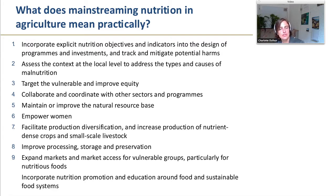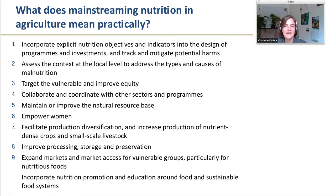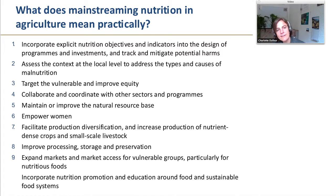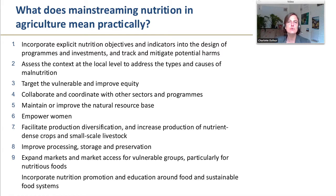Concretely, what does it mean to mainstream nutrition in agriculture? We've been involved in facilitating a process of capitalizing on lessons learned and reviewing all recently published guidance on mainstreaming nutrition in agricultural programs over the last two years, working through the ACT2 Nutrition Community of Practice — facilitated by FAO, in particular consultant Anna Herkhorst, engaging over 70 experts. We boiled down key recommendations to 10 points. The first is to incorporate explicit nutrition objectives and indicators in the design of programs. We can't assume agriculture will automatically have a positive impact on nutrition, and we should also be tracking and mitigating potential harms.